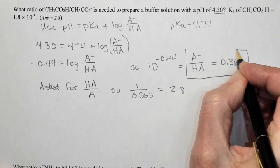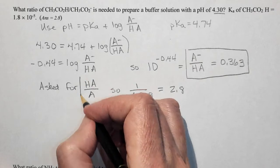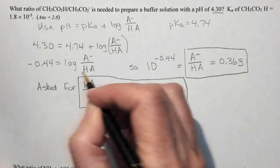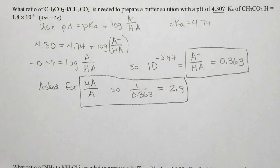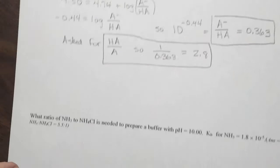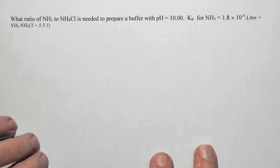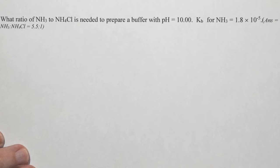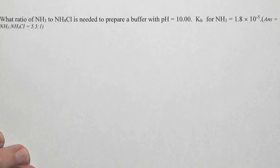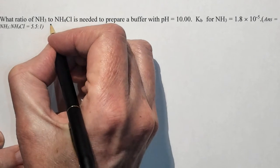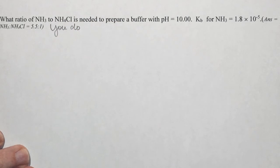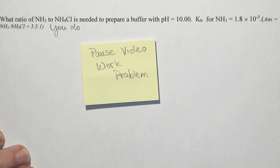Now either one of these really is an acceptable answer. But just watch yourself if you're on something like a multiple choice question and you run across something like this. The next question is what ratio of NH3 to NH4Cl is needed to prepare a buffer with a pH of 10. So this one you are going to do and you can restart the video when you're ready to check your answer.